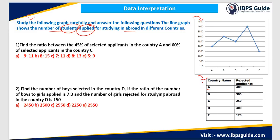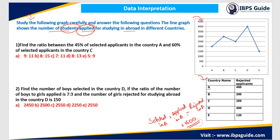So if we have applied and rejected figures, how can we find the selected students? Selected in country A will be equal to applied in A minus rejected in A. In country A, the total number of students who applied is 2000 and rejected is 400. So 2000 minus 400 equals 1600. Like this, you can find the number of students selected in any country for higher studies. I think the line graph and the table graph are now understood.